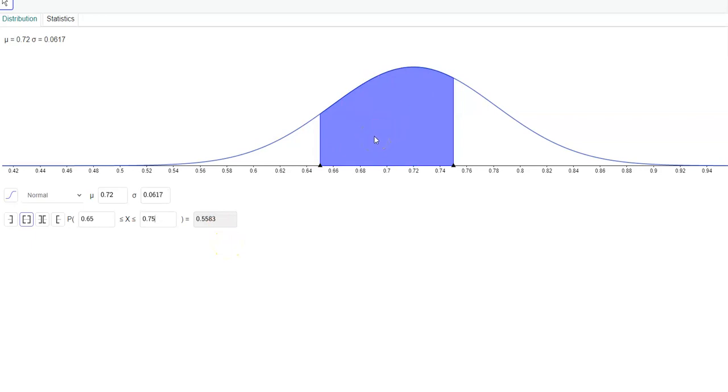You can see this is what it is. What they found was that 72% of the families ate out more than that. So if we're looking at how many fell between 65 and 75, you can see a great deal of them did, 0.72 being that center mean.